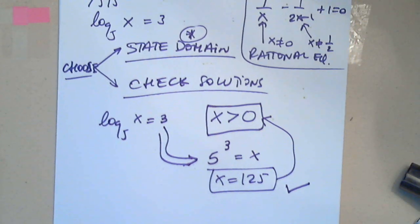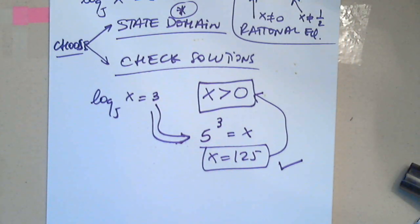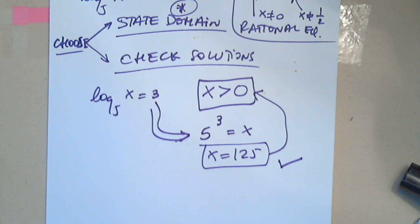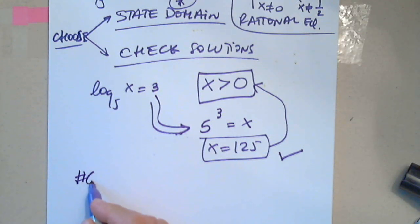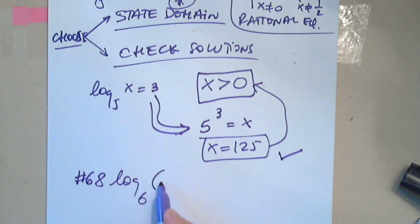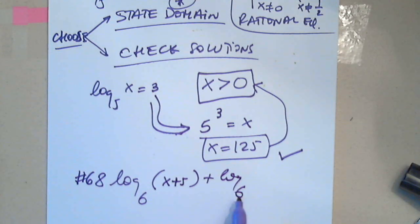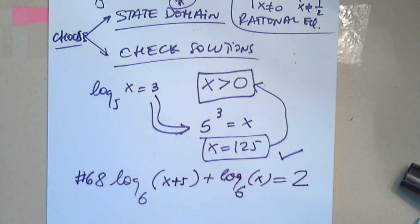So let's work on one more. You see the benefit of knowing how to condense, and then we'll have a lot more next time. So log base 6 of x plus 5 plus log base 6 of x equals 2. Good.